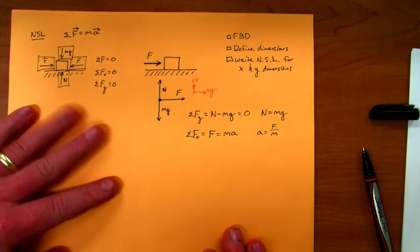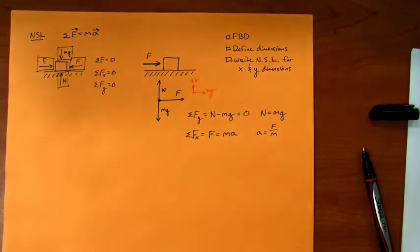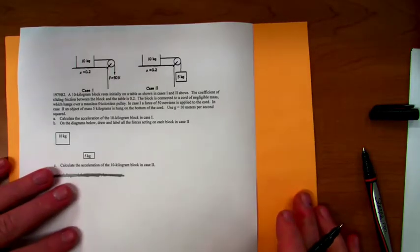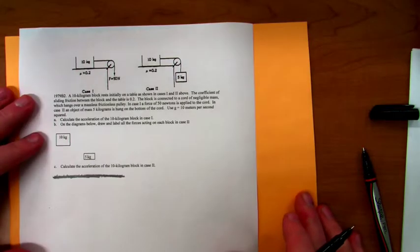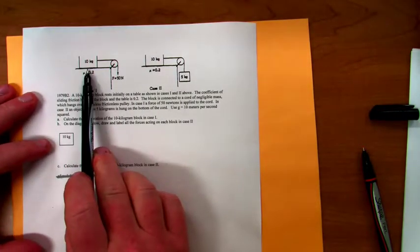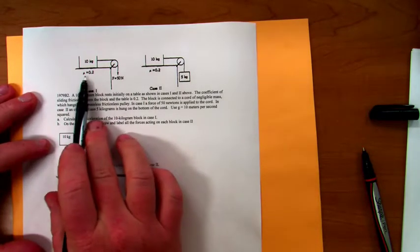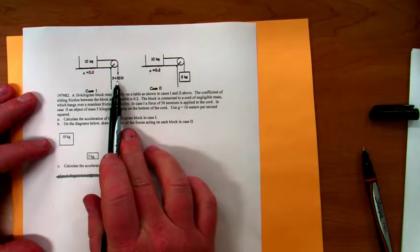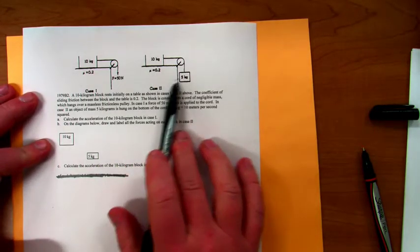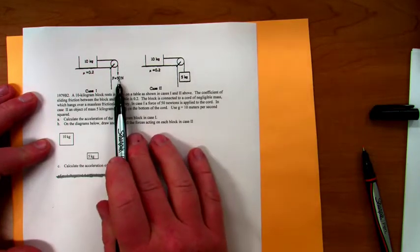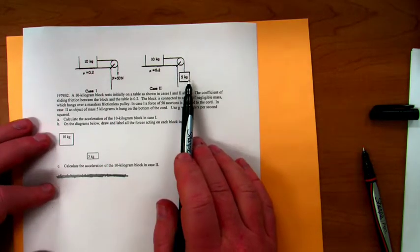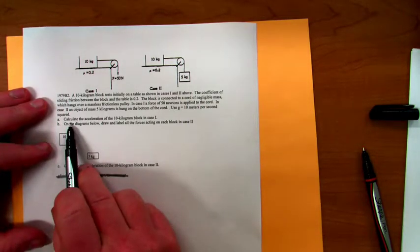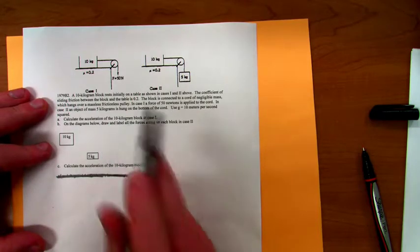We can look at a more complicated problem — this is an old AP problem. There are two cases: a block on a plane with friction, coefficient of friction given, and a force downward of 50 Newtons. In case two, everything is the same but instead of just that downward force, there's a 5 kilogram block hanging. The first question asks us to calculate the acceleration of the 10 kilogram block in case one.